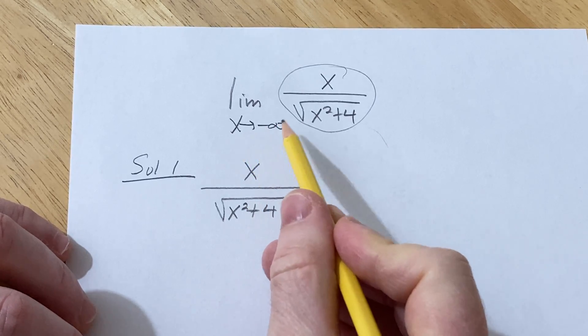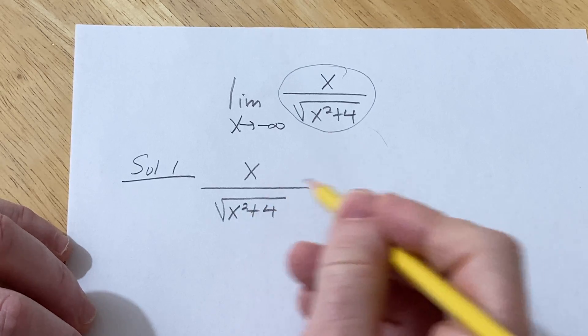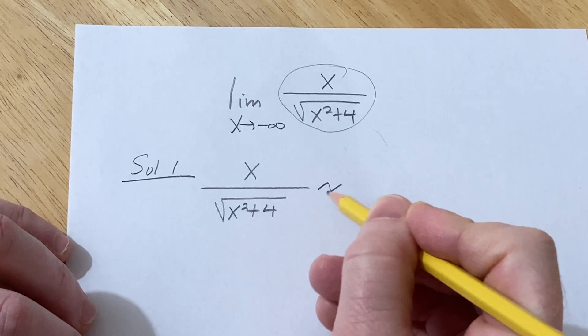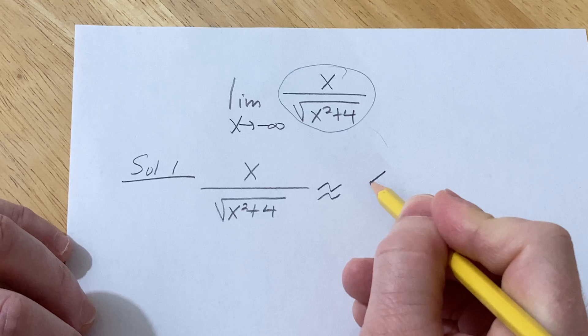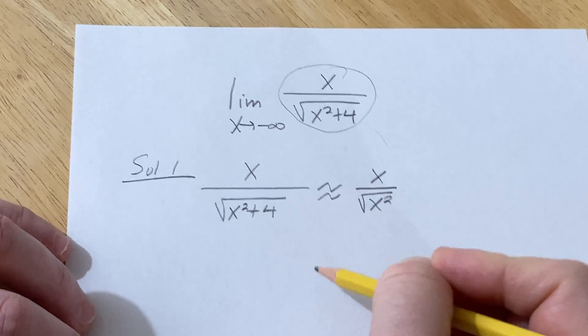So when x is approaching negative infinity, x squared is going to be positive and really huge. So the 4 doesn't really matter. So this is approximately equal to x over the square root of x squared because we can drop the 4.